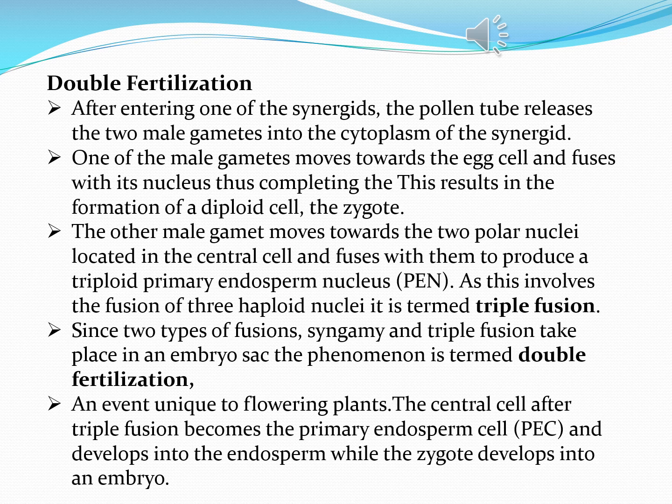The other male gamete moves to the polar nuclei. We know that the polar nuclei consist of two nuclei present in the central cell. That male gamete fuses with the polar nuclei and becomes the triploid primary endosperm nucleus, forming the endosperm. This is abbreviated as PEN — primary endosperm nucleus. Since this involves the fusion of three haploid nuclei, it is termed triple fusion.